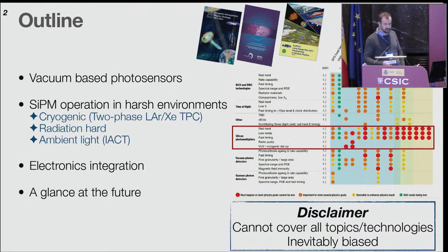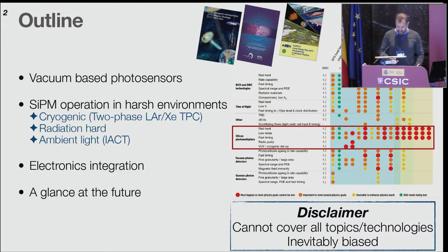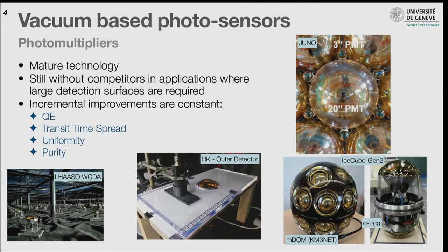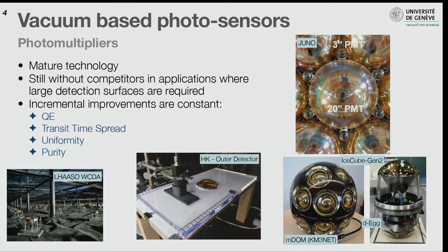I'll cover electronics integration — CMOS integration as close as possible to the sensor — and things we may get from other fields. Vacuum-based photo sensors: I cannot skip this, because there is still no competitor for PMTs and vacuum-based photo sensors when it comes to covering very large surfaces. It's also very mature technology; you don't put detectors in the ice for eternity if you're not sure they'll work. Here you see the upgrade sensors for IceCube Gen 2.